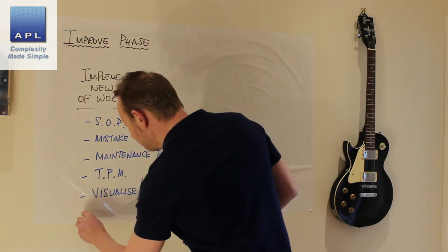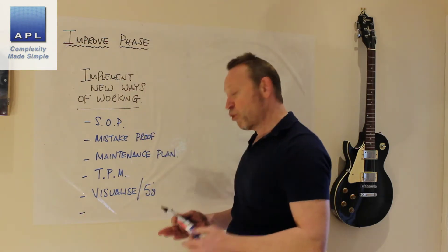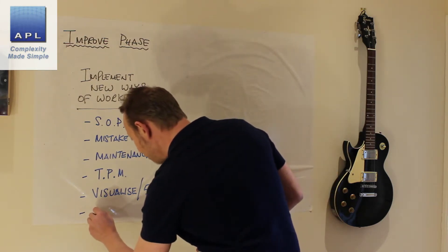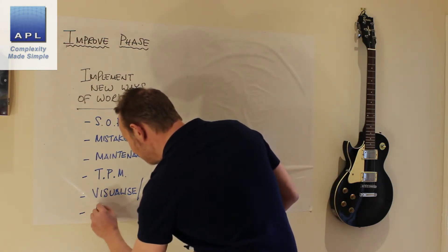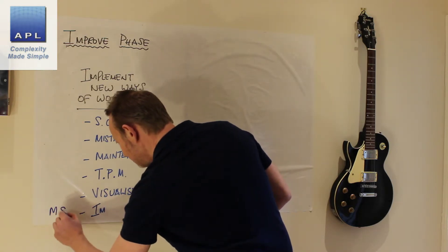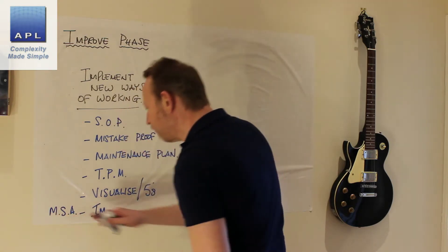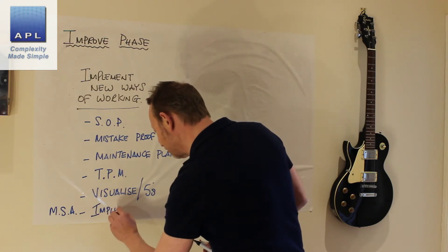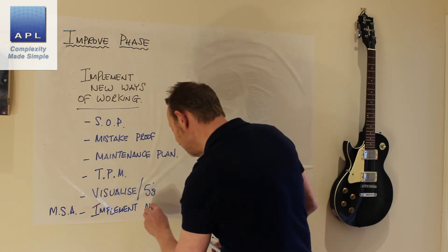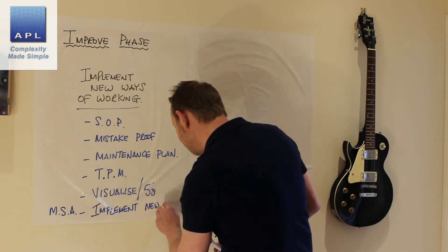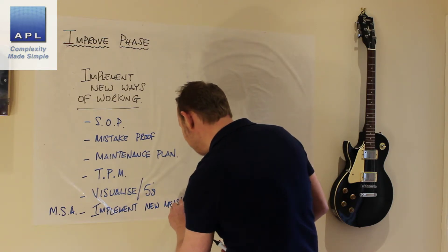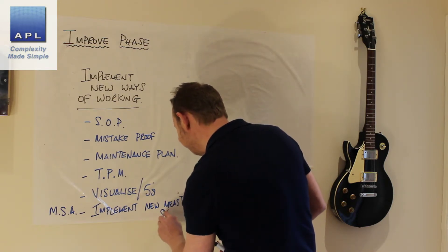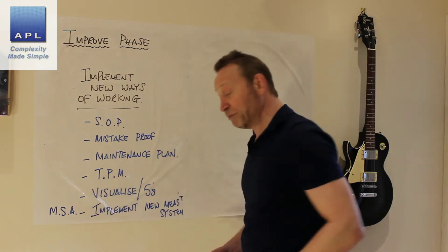The only piece that could be a work in progress is if you're going to do an MSA. So this is linked to doing an MSA — you find that you have a problem with your measurement system, and then you're going to implement a new measurement system. That's kind of work in progress that sometimes takes a while to do, but that might be part of your Improve phase as well.